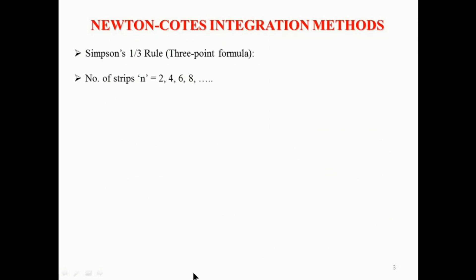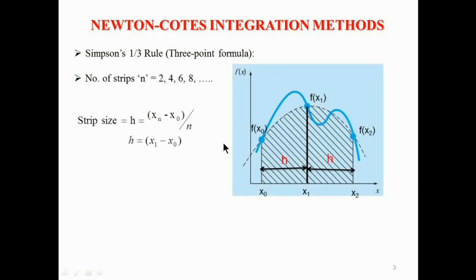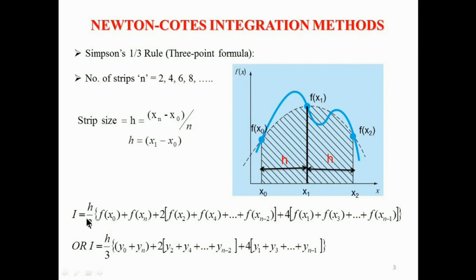The second method is Simpson's 1/3 rule, also called the three-point formula. As we are replacing the original curve with a second-degree curve, to use Simpson's 1/3 rule, the number of strips must be 2 or a multiple of 2. For n number of strips, Simpson's 1/3 rule is: I = (h/3) × [f(x0) + f(xn) + 2 × (summation of even terms of f(x)) + 4 × (summation of odd terms of f(x))].